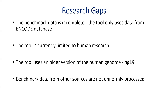Again, the tool has been using another version of the human genome, HG19, but currently we have the HG38 genome available, so we intend to upgrade the tool. And finally, the benchmark data from other sources is not uniformly processed, so we want a uniform processing pipeline for datasets collected from other sources.